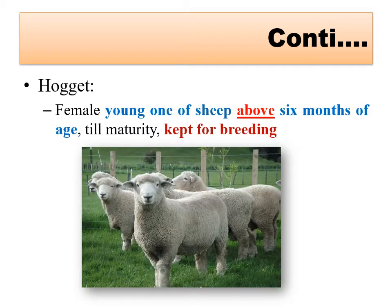A hogget is the sheep equivalent of a heifer in cattle and buffalo. A hogget is a female young one of sheep above six months of age until maturity or until it becomes a mother for the first time.